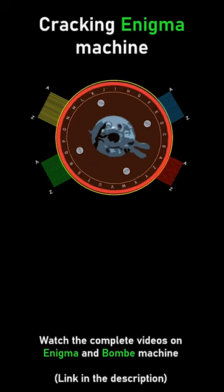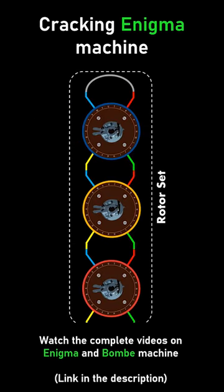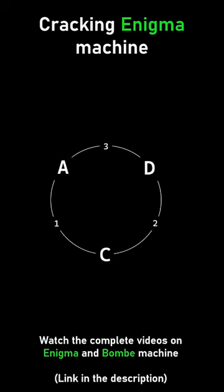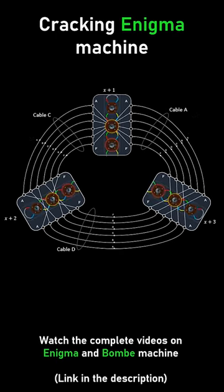Make similar Bombe rotors for all the Enigma rotors to get a rotor set. Get a crib which can form a loop like this. Build the wiring for this crib. This wiring is possible using the Bombe rotor sets we saw earlier.